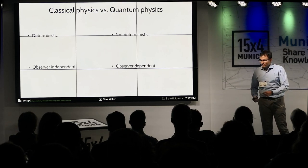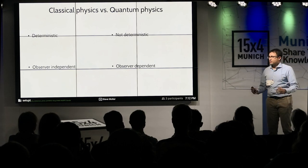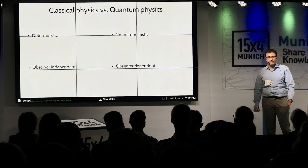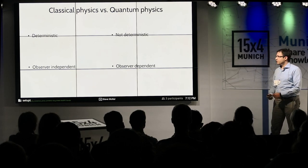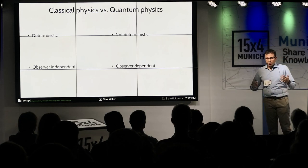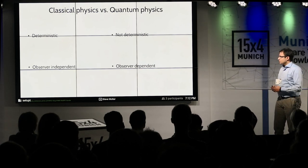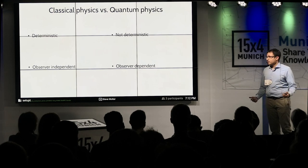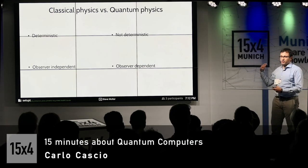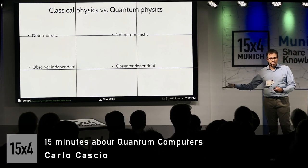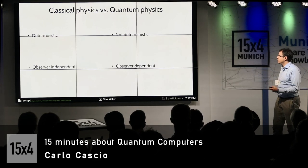Then some scientists in the past, like Feynman, said: can we use these properties to build a more powerful machine? And they started to think about the quantum computer. To understand it, I thought it would be nice to start with a classical computer and then switch to quantum to understand the difference.